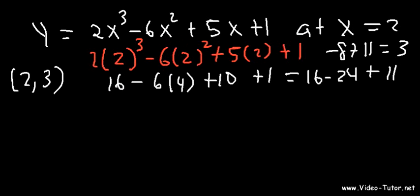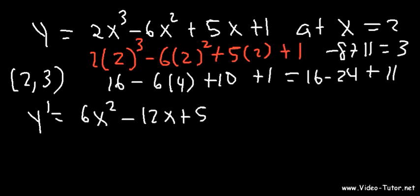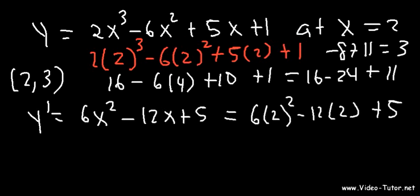Now we need to find the first derivative. The derivative of 2x to the third is 6x squared. The derivative of 6x squared is 12x, and then plus 5. Now let's plug in the x value, which is 2. So 6 times 2 squared minus 12 times 2 plus 5. 2 squared is 4 times 6, that's 24. 12 and 2 is 24. Those cancel. So the slope is 5.